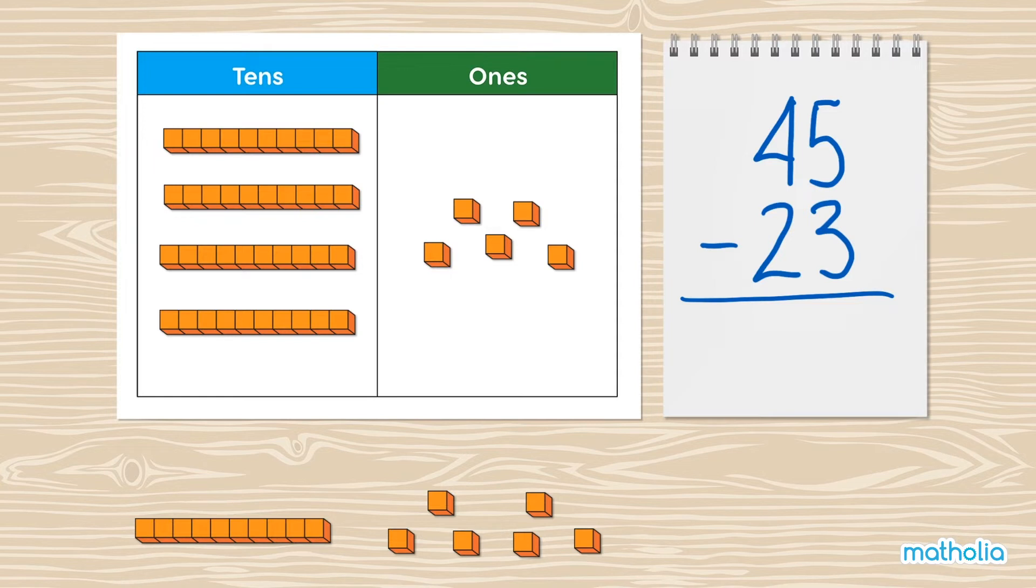Start with the ones first. Let's take away 3 ones. 1, 2, 3. There are 2 ones remaining. Write 2 in the ones column.